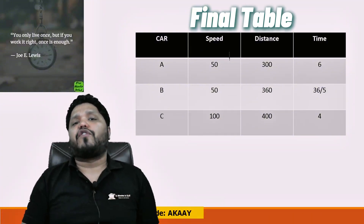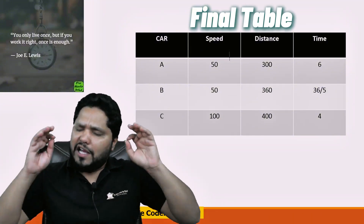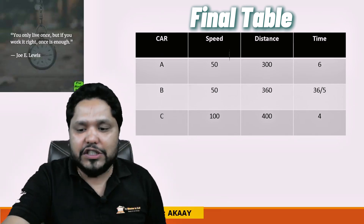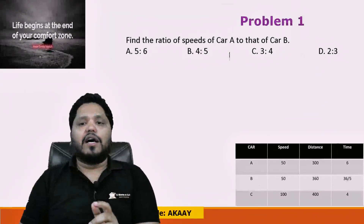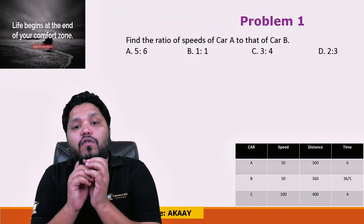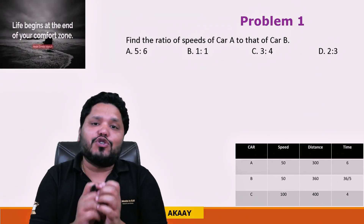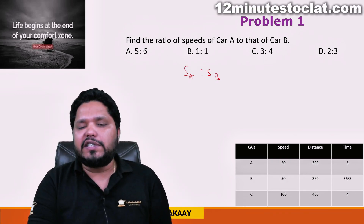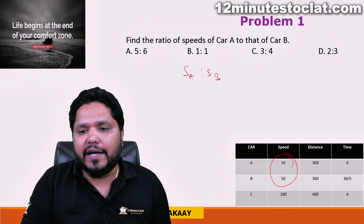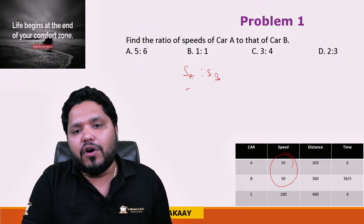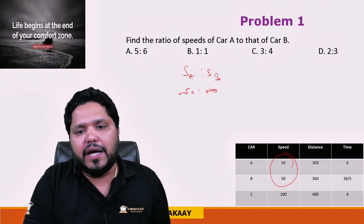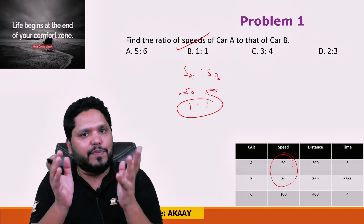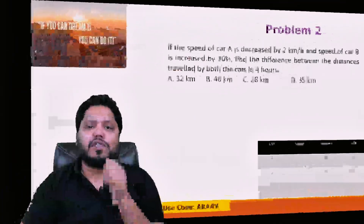With the full table ready, we can now solve the questions. Question 1: What is the ratio of the speed of Car A to that of Car B? Since both speeds are 50 km/h, the ratio is 1:1. So option B is the correct answer for this question.